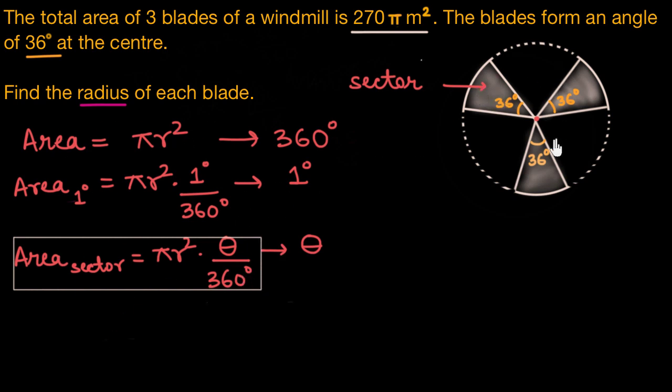As each of the blades of this windmill is a sector, we can say that the area of each blade is equal to πr² times the angle it subtends at the center, which is 36° divided by 360°. This gives us the area of a single blade.